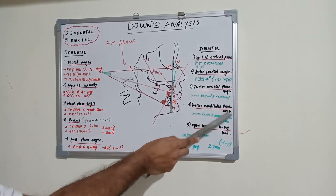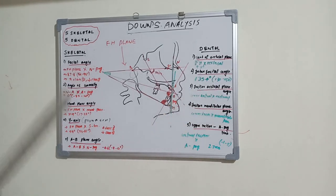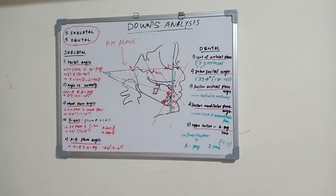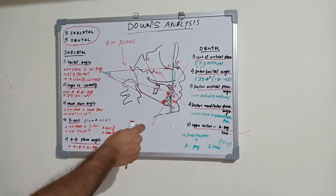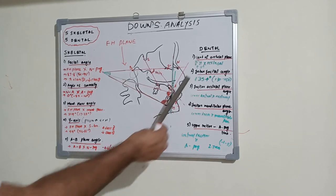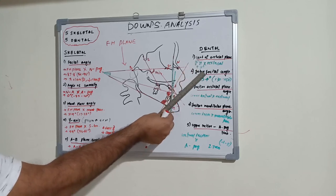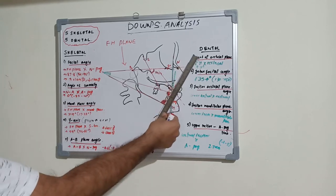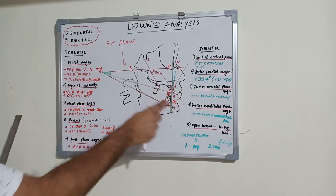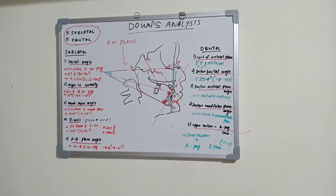The fourth dental parameter is the incisor mandibular plane angle (IMPA). Instead of the occlusal plane, this uses the mandibular plane. It is the angle formed between the lower central incisor long axis and the mandibular plane. The average value is 1.4 degrees, ranging from minus 8.2 to 7 degrees. An increase in this angle is suggestive of increased lower incisor proclination — if the lower incisor is proclined, this angle will increase.